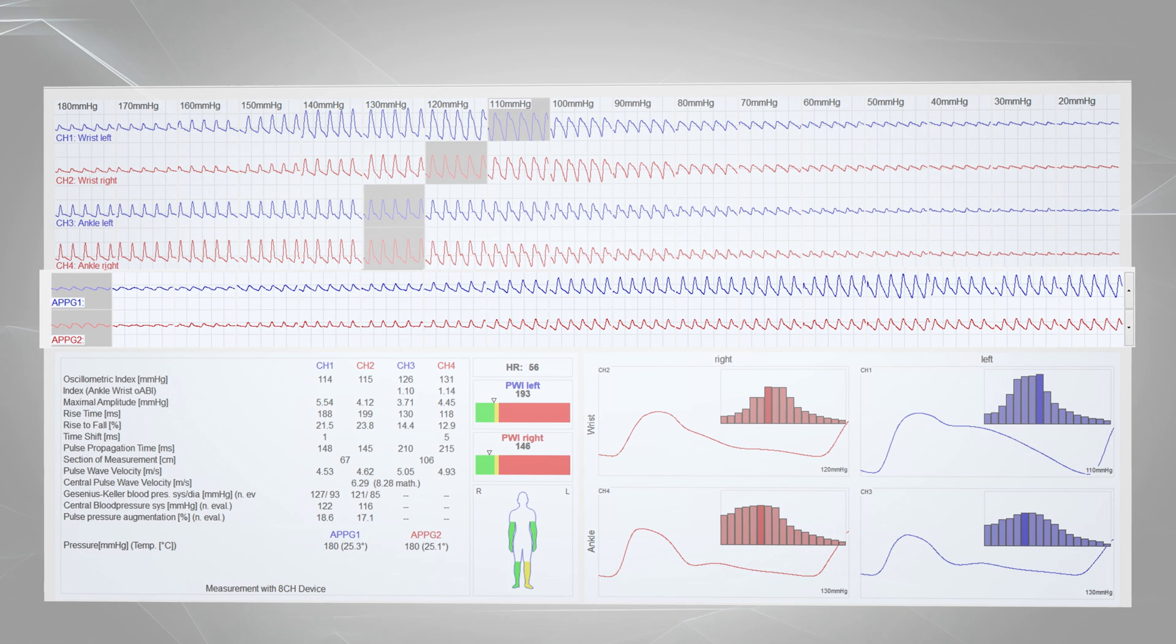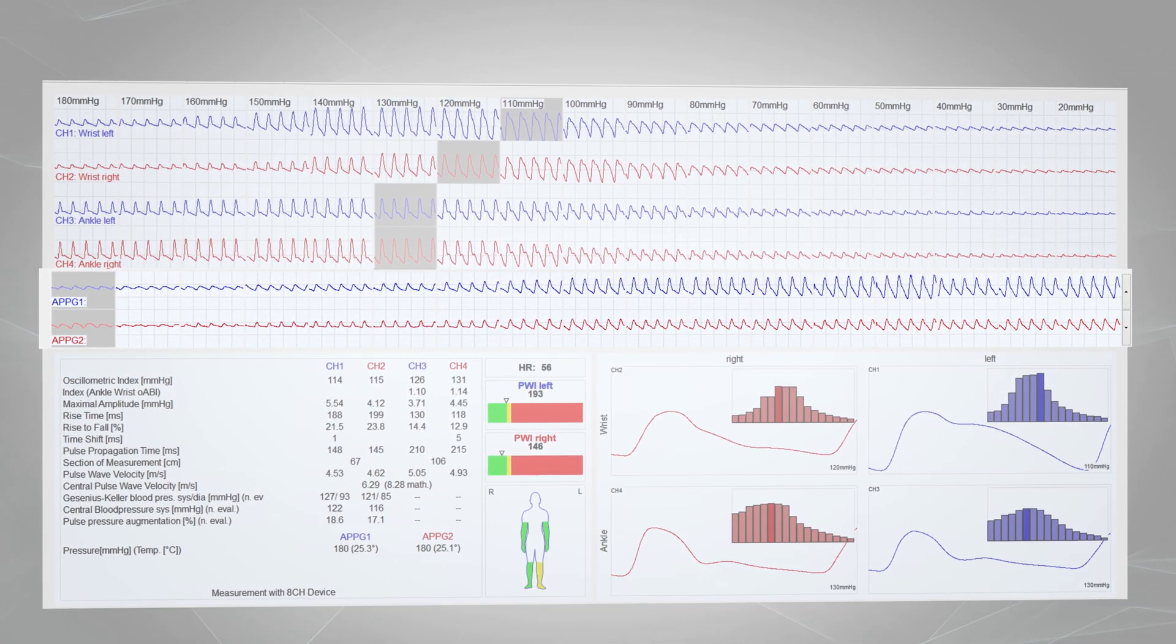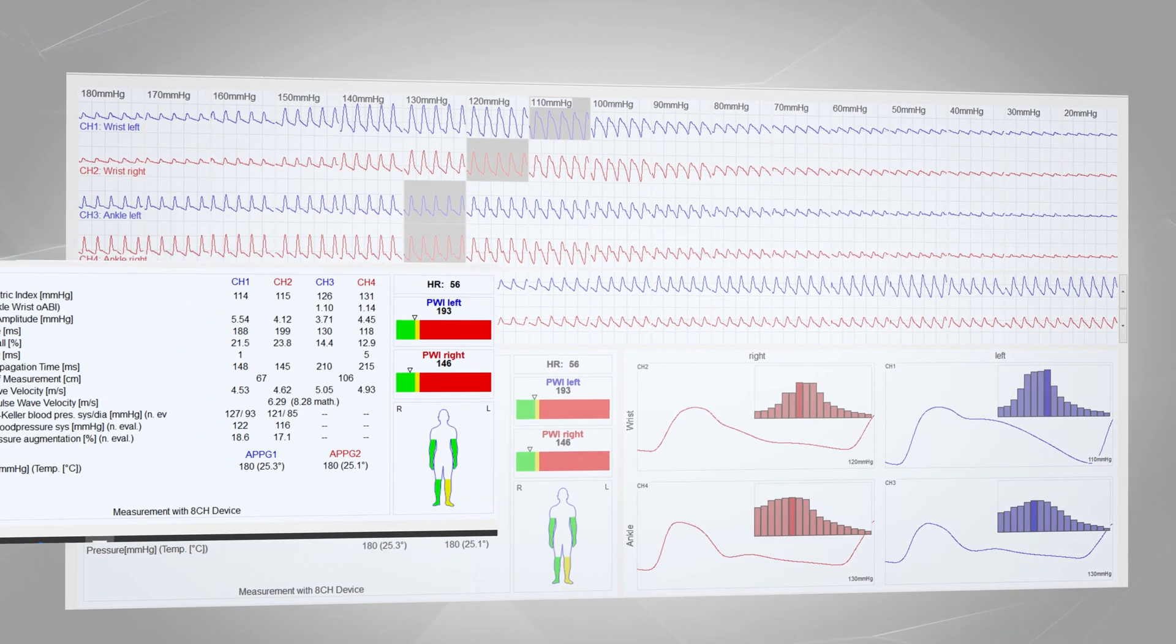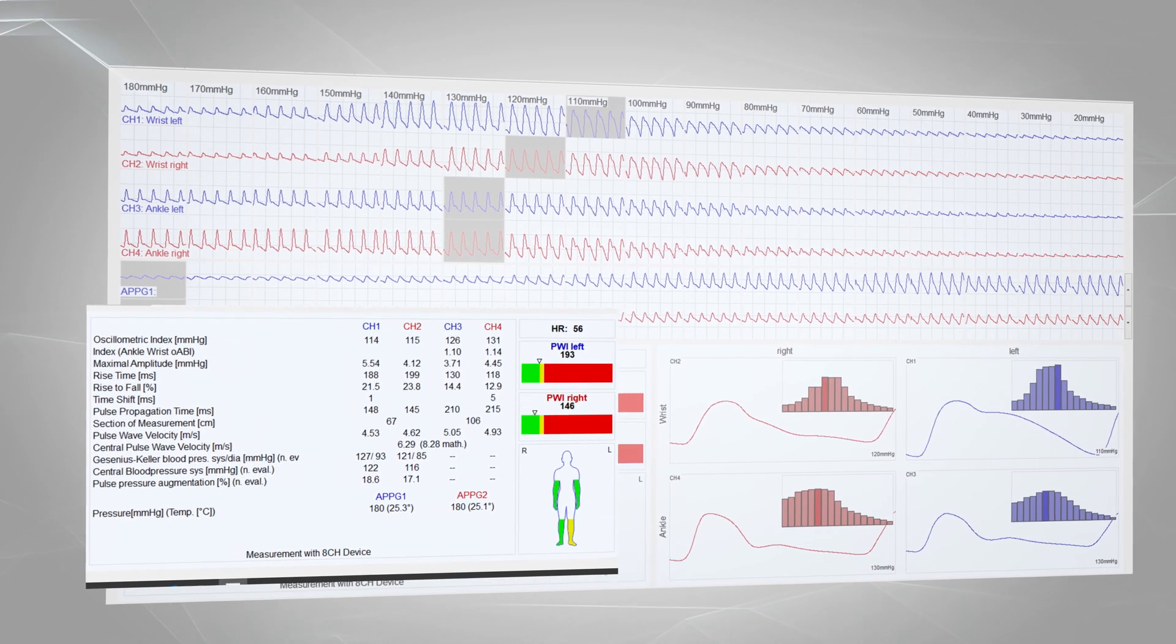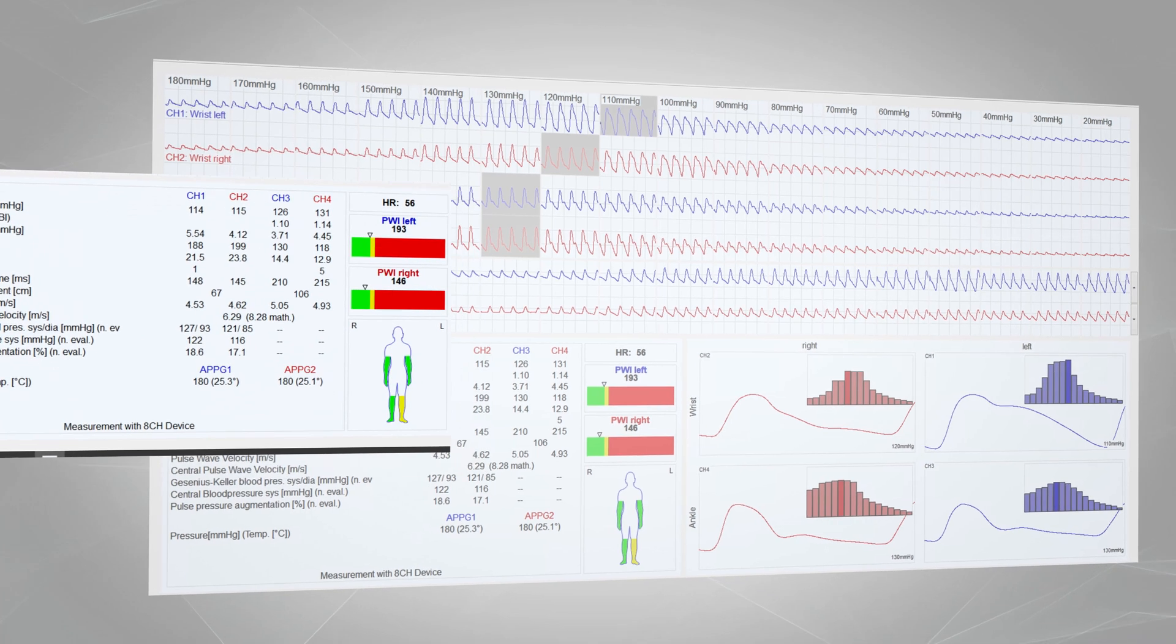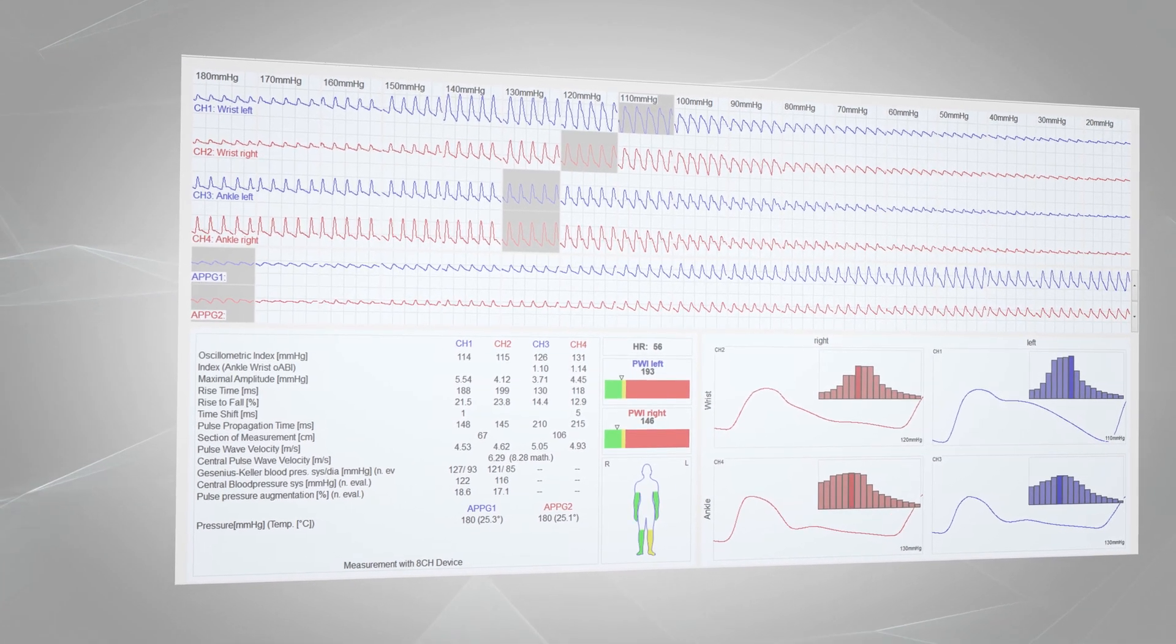By recording the optical sensors, it can be determined immediately at which pressure stage the first pulsation on the toes occurs. Simultaneously, various values such as ABI, pulse wave index PWI, peak time, pulse wave velocity, or heart rate variability are calculated and displayed.